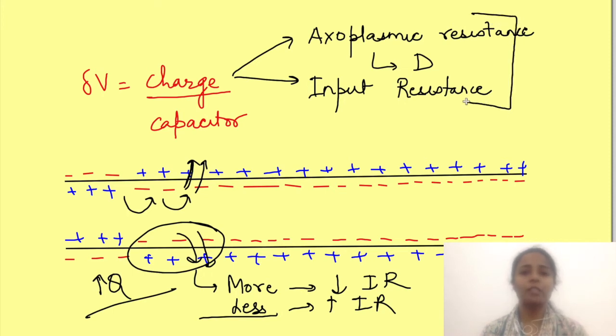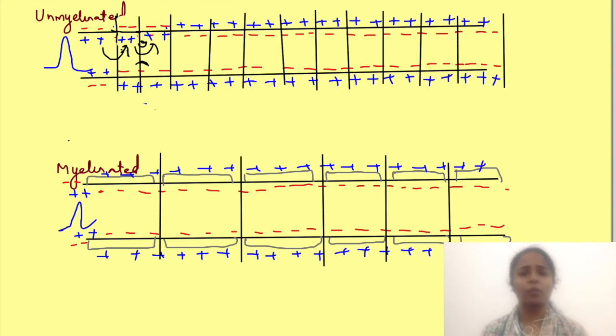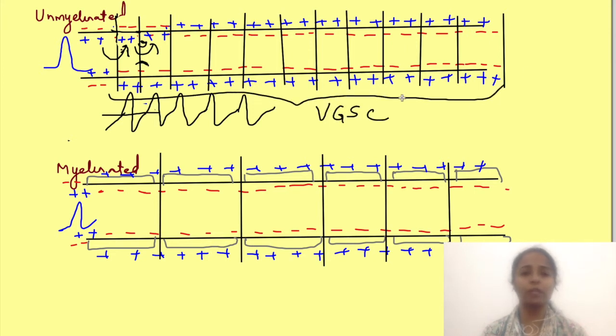Hence amount of charge at a site depends on axoplasmic resistance and input resistance of the membrane. Now with the amplitude of action potential which is at this original site, even with the loss of charges the potential change which occurs in nearby region reaches the threshold and leads to generation of new action potential. So in unmyelinated neuron generation of action potential occurs at very close distances. For this to occur there is very high density of voltage gated sodium channels throughout the length of the axon.